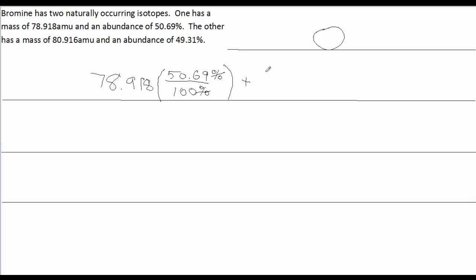And the contribution of the other isotope to the atomic mass of bromine would be 80.916 AMUs.